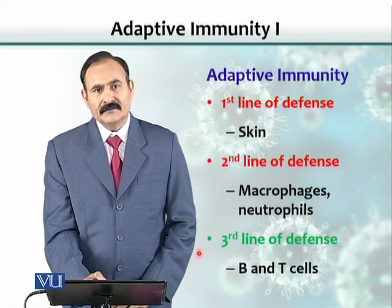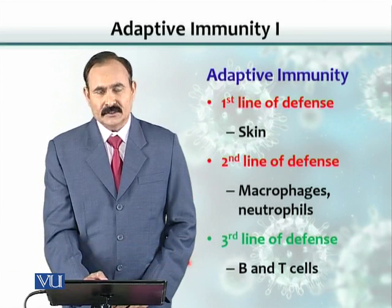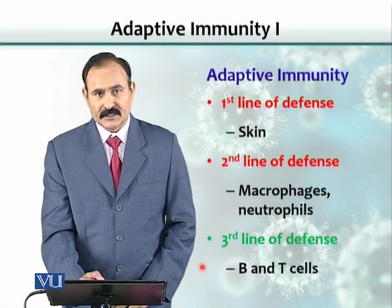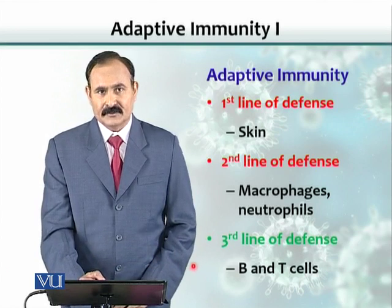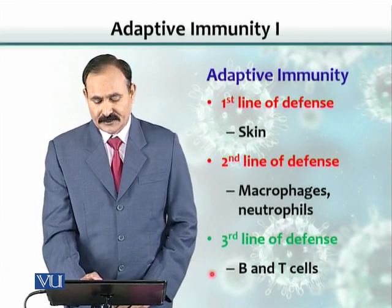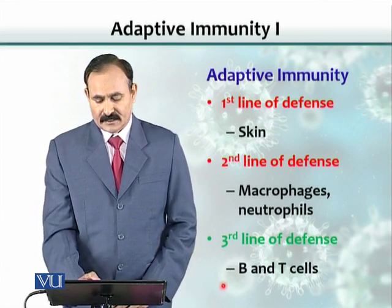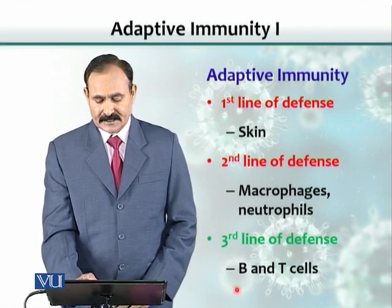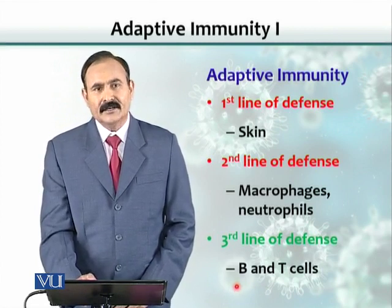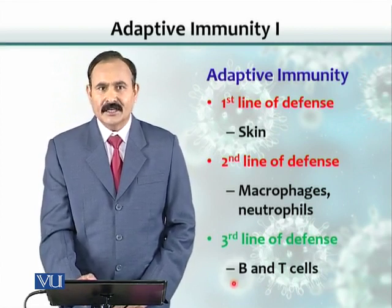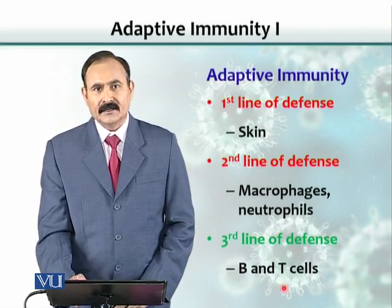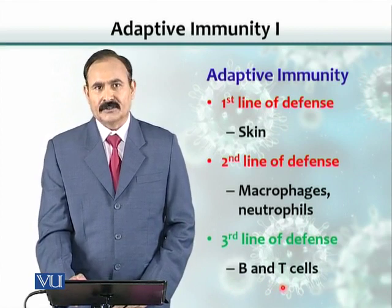The third line of defense, which today we're discussing — the adaptive immune response — is basically B cells. B cells constitute the third line of defense, and T cells constitute the fourth or last line of defense.